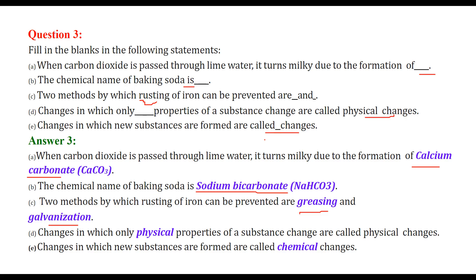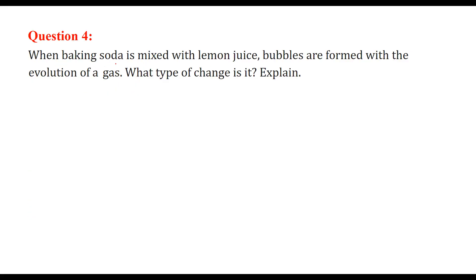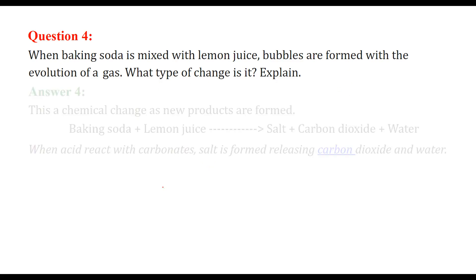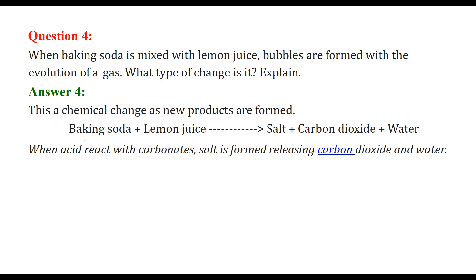When baking soda is mixed with lemon juice, bubbles are formed with the evolution of gas - what type of change is it? When baking soda is combined with lemon juice, you will see salt, carbon dioxide, and water being produced. When an acid reacts with carbonates, salt is formed releasing carbon dioxide and water.